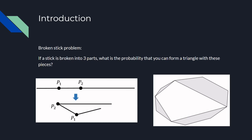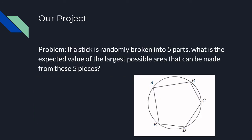However, you can then increase the area of the n-gon by making that quadrilateral cyclic while keeping the shaded regions in the middle. Our project deals with the following problem as shown on this slide. If a stick is randomly broken into five parts, what is the expected value of the largest possible area that can be made from these five pieces?